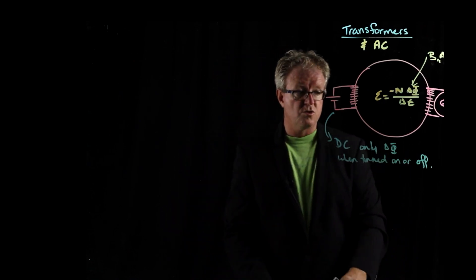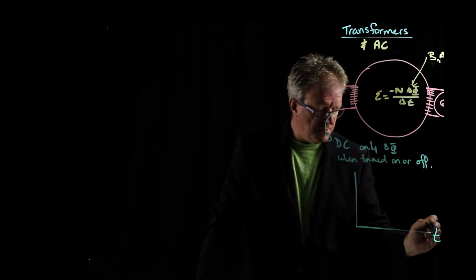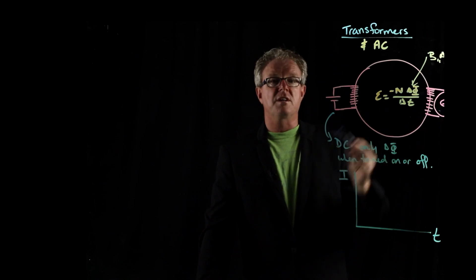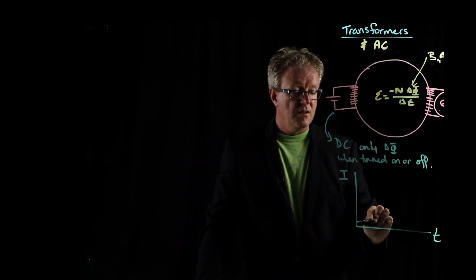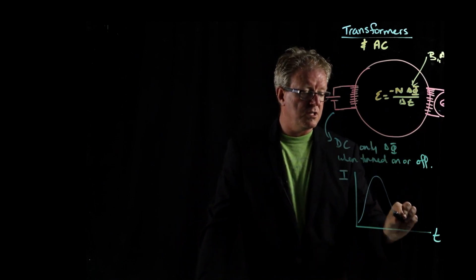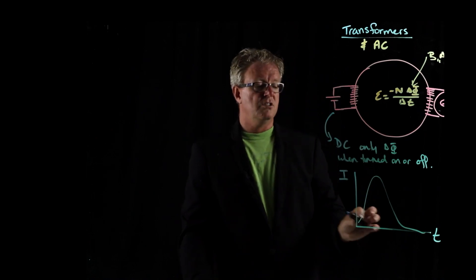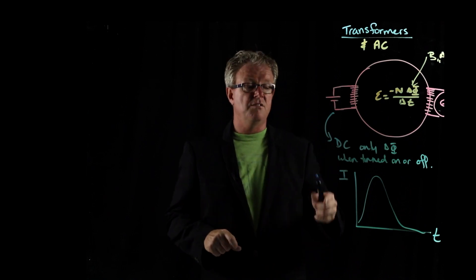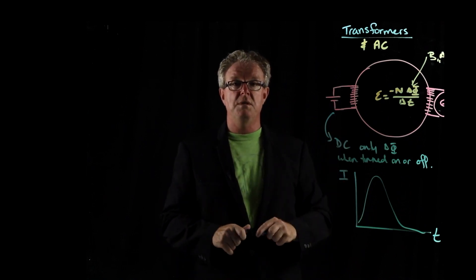So if we were to draw a graph of that, so time, and then we have current. And this would be the graph of the current in the galvanometer there. That with DC, it would go up and go down and then zero. So you have initial production of the current, and then it would turn off. So you have an initial pulse, and that would be it.